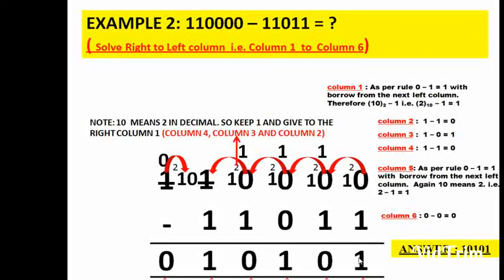So 10 is 2 — take it this way: 2 minus 1 is 1. In the answer row you write 1. Come to the second column: 0 minus 1. You had 1 here because when you had 2 you kept 1 and passed 1 to the first column. So 1 minus 1 is 0. The third column is 1 minus 0, which is 1.